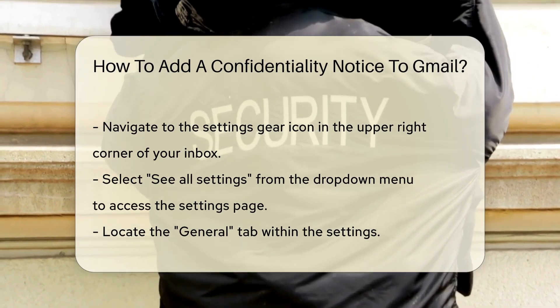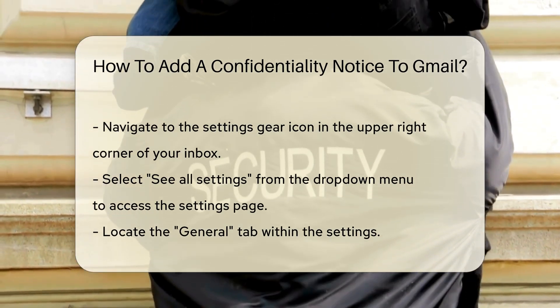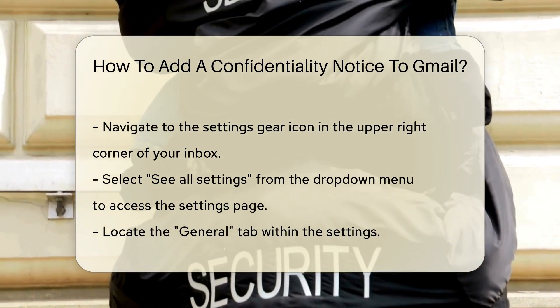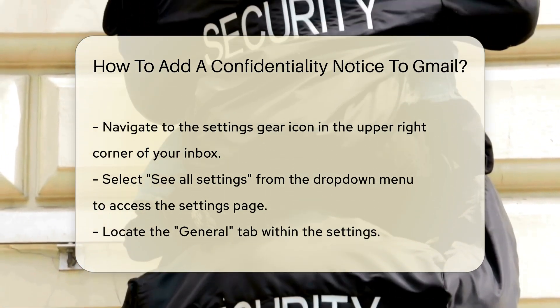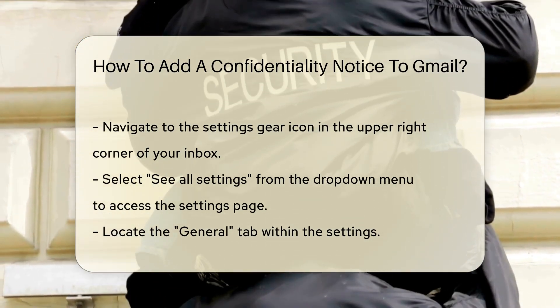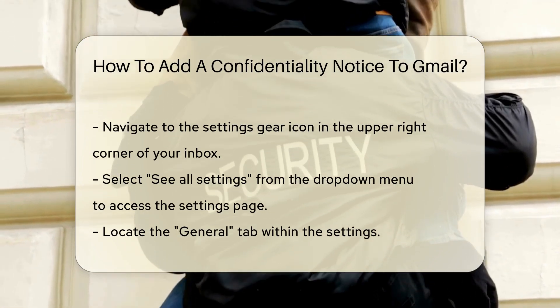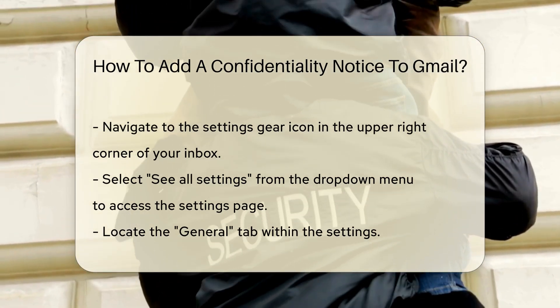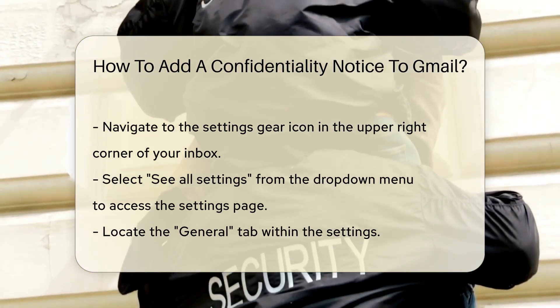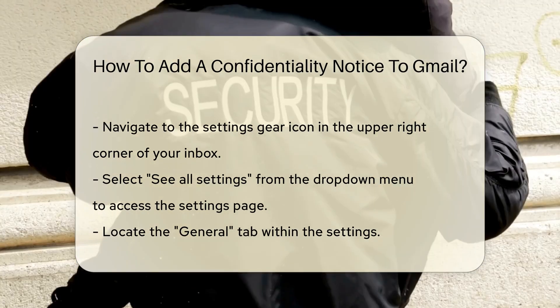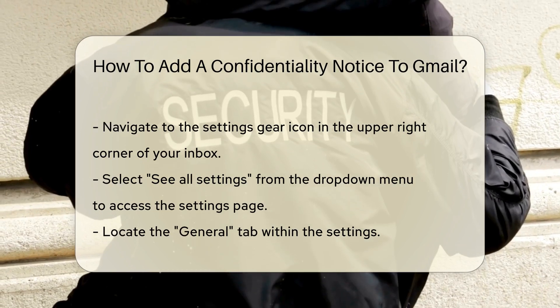Next, find the General tab. Within this tab, scroll down until you reach the Signature section. Here, you will have the option to create a new signature. This is where you can add your confidentiality notice.